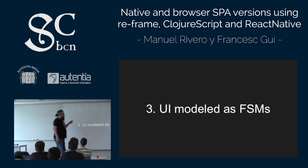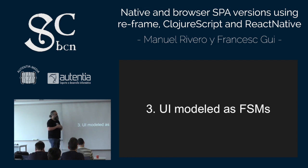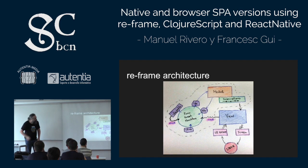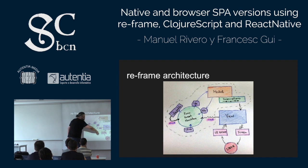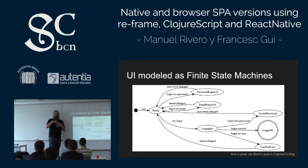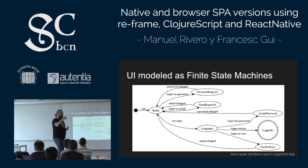Another interesting thing is that it was really easy to model the UI as finite state machines. In this unidirectional data flow architecture everything is driven by events — from UI events or dispatched effects. It's an event-driven data flow, and this goes very well with thinking in finite state machines. We ended up having short sessions discussing events and states, drawing a bit, then starting pair programming, and it was a really nice flow.